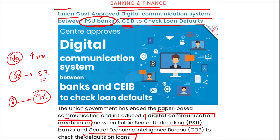Under the digital mechanism, CEIB will send a report digitally regarding borrowers to PSU banks for loans of 50 crore rupees or higher at pre-approval stage, within 15 days of request. It is mandatory for all PSU banks to furnish a report from CEIB for loan seekers of 50 crore rupees or more. The new system requires banks to submit requests to CEIB through dedicated emails in a specified format.